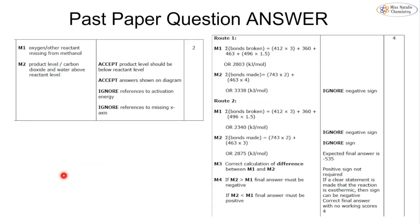Looking at the mark schemes, we get two marks for the reaction profile and four marks for the calculation, with a final answer of minus 535 kJ/mol. Note that transferred errors are allowed — if you make an arithmetic mistake early on, you can still get marks for the correct method and sign. That's everything for topic 3a energetics for the triple content. Check back for other videos, and feel free to leave a comment if you have any questions.